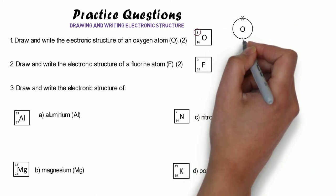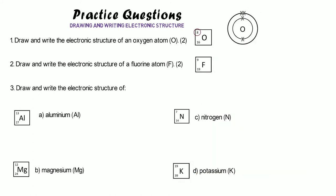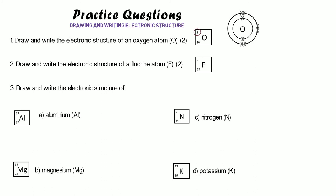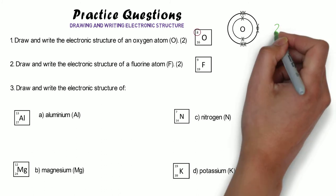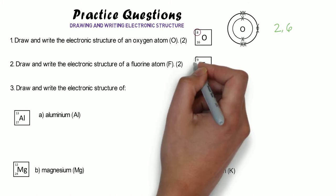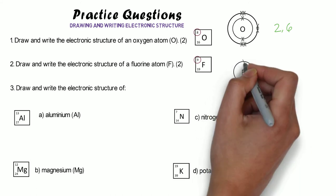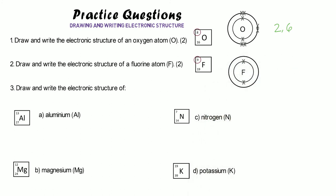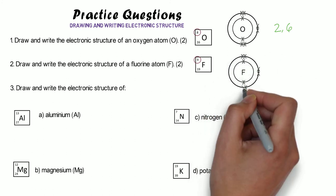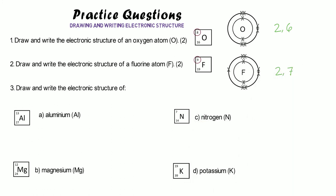Oxygen has eight electrons. We put two in the centre shell, and then six left to place in the second shell. We describe that as 2,6 — two in the centre and six in the next shell. First we've drawn the electronic structure, then we've written it. Fluorine has nine electrons, so we have two in the centre and seven left, which all go in the next shell, making a total of nine. The written structure is 2,7.